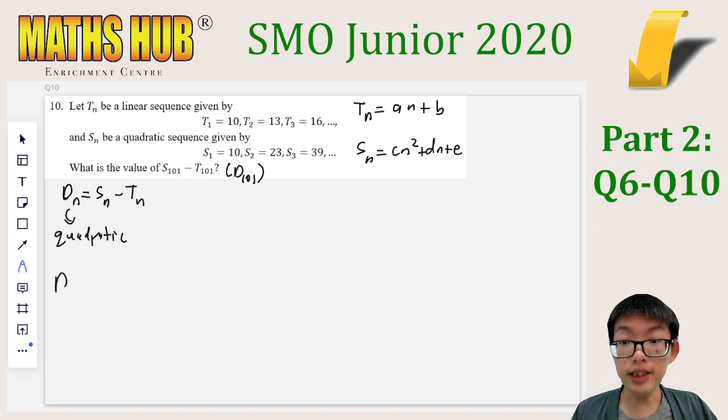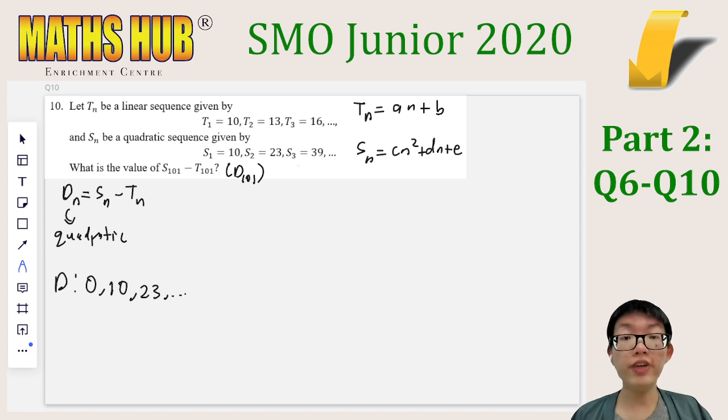So my sequence D, S1 minus T1 is 0, S2 minus T2 is 10, S3 minus T3 is 23, and so on. So what we want to find would be D101.